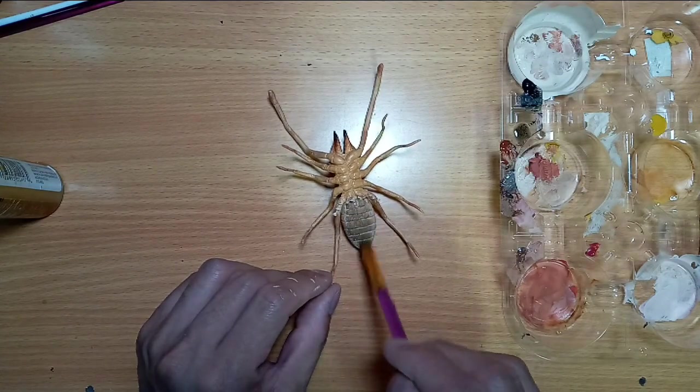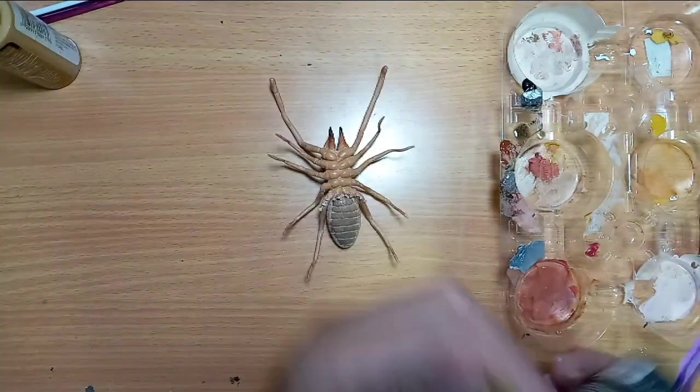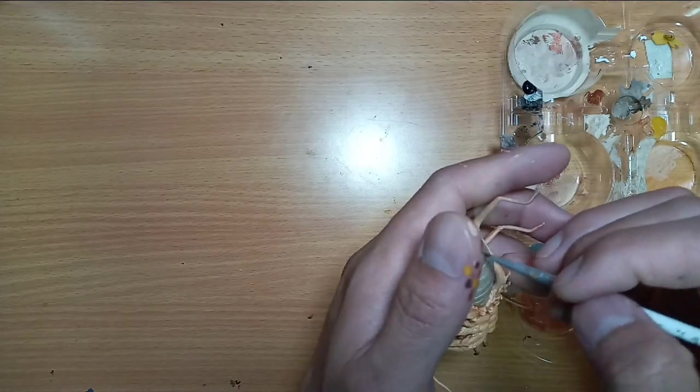Now for the underside of its abdomen, I use raw umber, burnt sienna, black, and a little bit of white.